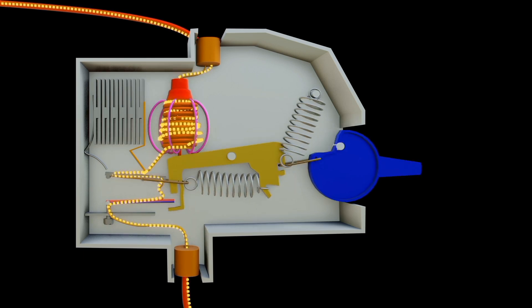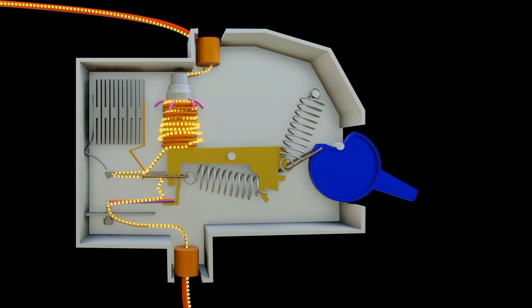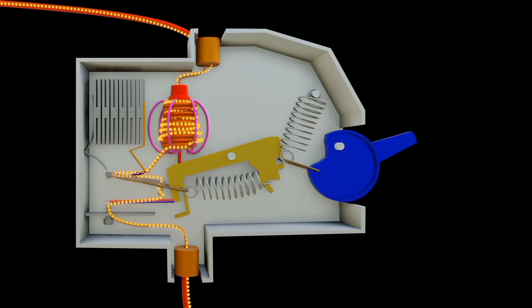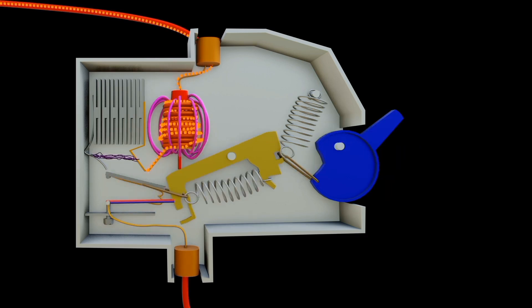But how is this arc formed? As the contacts open, an electrical arc forms between the moving contact and the fixed contact. This is due to ionization of air in the gap created. The arc chamber then contains arc shoots which are designed to quickly redirect the arc into the arc chamber. This helps in controlling and containing the arc within a confined space.